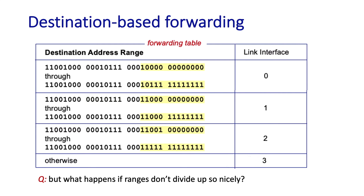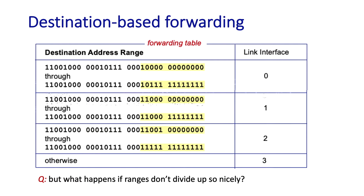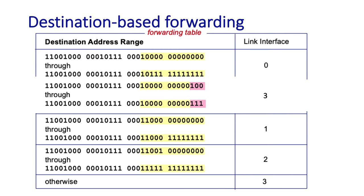This all looks pretty simple, but the devil is in the details. What happens when packets with a destination address in some subset of the first range should go to interface 3 rather than interface 0? We could split the first address range into multiple pieces and add in the new sub-range with its new destination output port. But it turns out there's a much simpler and more elegant way to do this — known as longest prefix matching.